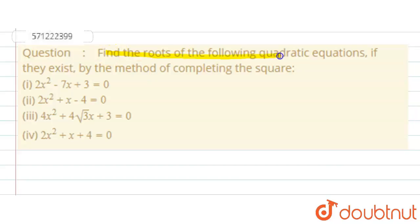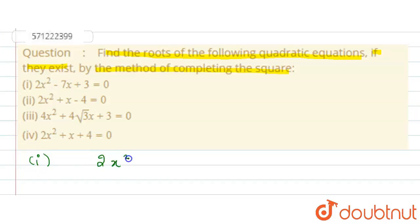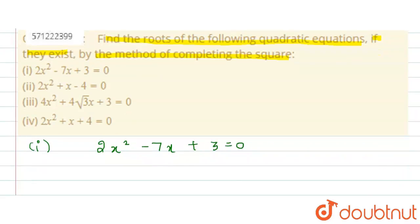Find the roots of the following quadratic equations, if they exist, by the method of completing the square. We are given four parts — let us solve each part one by one. The first part: the equation given is 2x² minus 7x plus 3 equals 0.